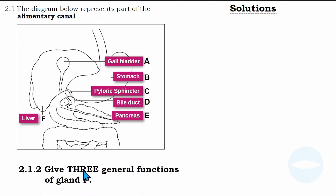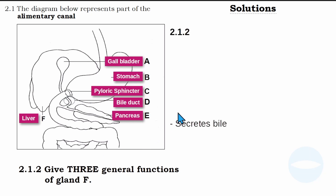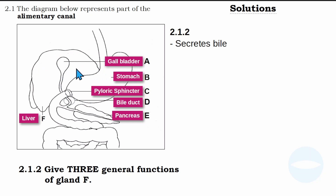The next question says: give three general functions of gland F. Gland F is the liver, so we have to give the functions of the liver. The liver has many functions; I will label more than three. Function number one: the liver secretes bile. By secreting bile, we mean it produces bile. Bile is produced in the liver and then it is stored in the gallbladder. Don't make a mistake — liver produces bile, and then the bile is stored in the gallbladder. When bile is needed in the small intestine, it is released from the gallbladder. So this is one function of the liver: it secretes bile.